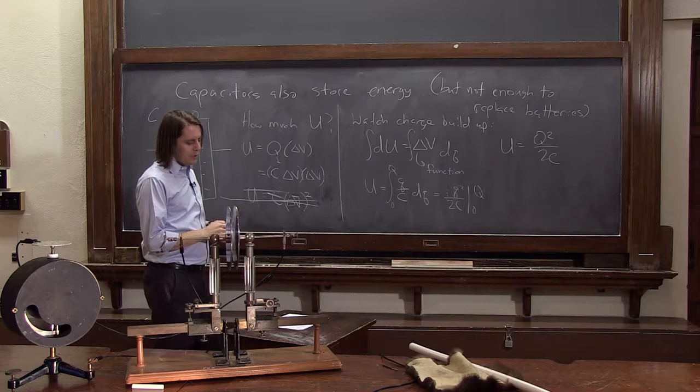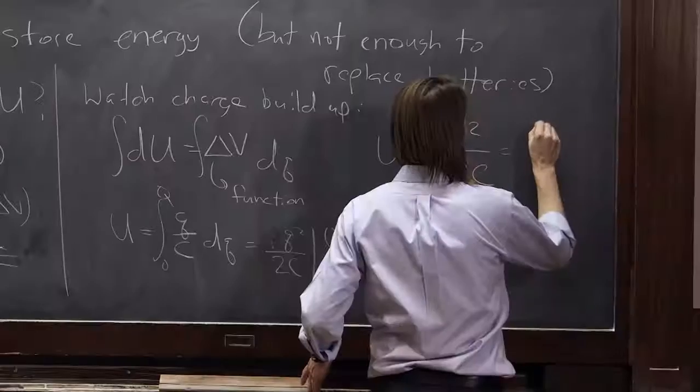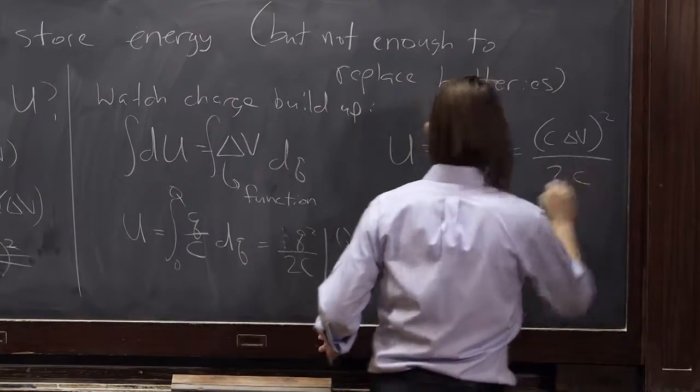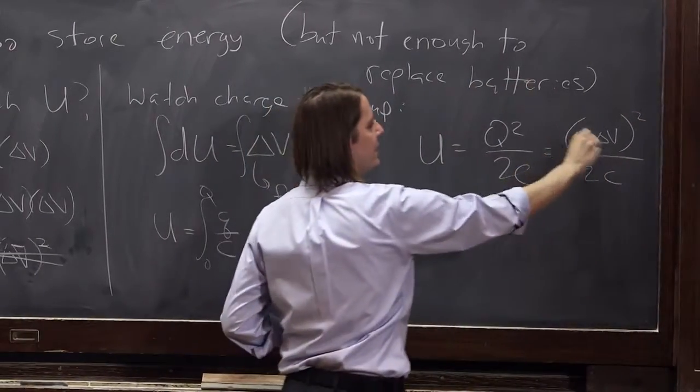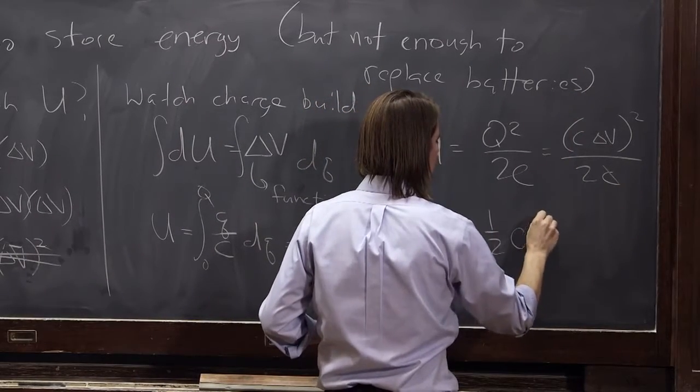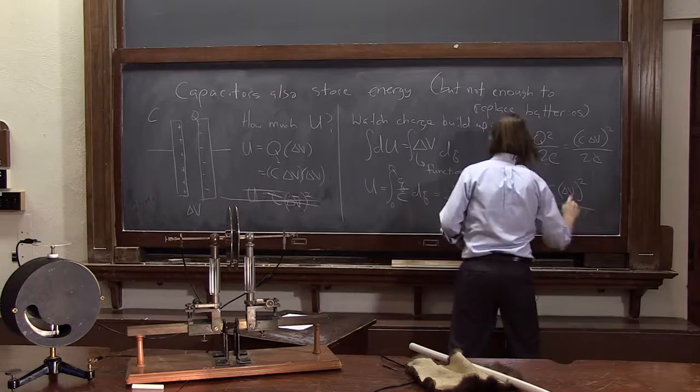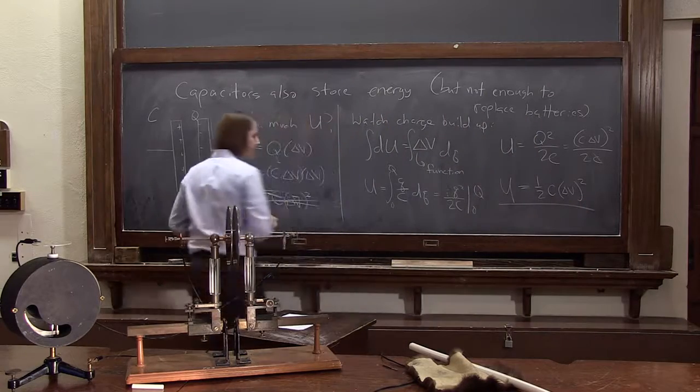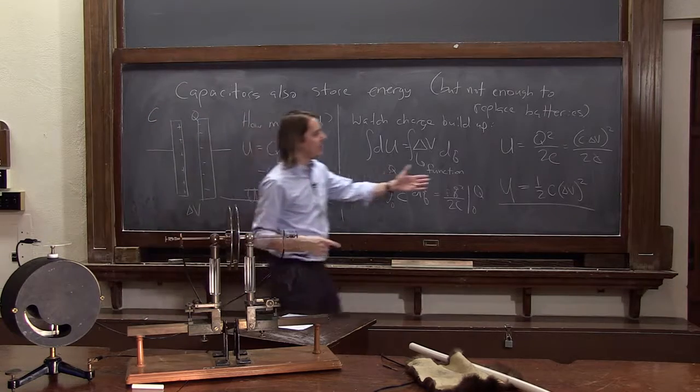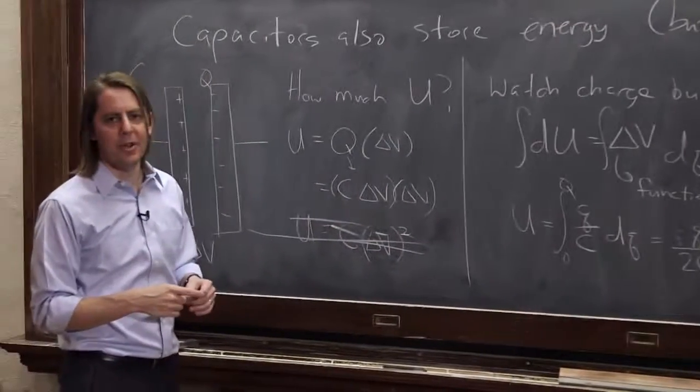And if you want to, you can write the Q as C delta V. C delta V squared over 2C. And then you get, let's see, that C cancels one of those. You get one-half C delta V squared. If you want to do it in the same terms as you did over here. So it's not C delta V squared. It's one-half C delta V squared. And the factor of a half is because the charge had to build up over time.